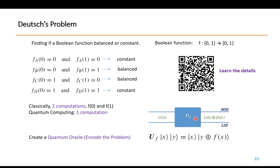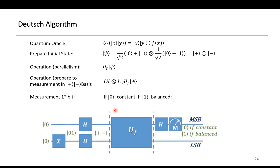A quantum oracle takes two inputs X and Y, and after the oracle gives output X and Y XOR F(X). This oracle does not tell you exactly what F(X) is, unlike classical computing, but encodes the answer via an XOR with input Y. The information is stored there, however we cannot know the individual answer. The flow of the Deutsch algorithm is: prepare the quantum oracle by encoding the function as a gate, and prepare the initial state using NOT and Hadamard gates.